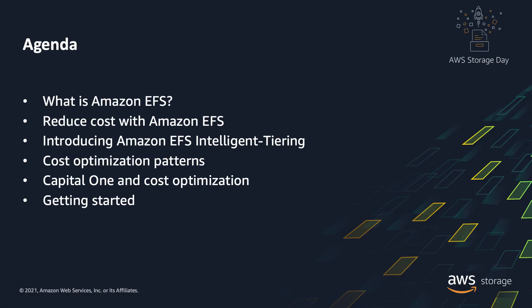I'd like to begin by giving you a quick overview of Amazon EFS. We will talk about the existing options or pillars of cost optimization in EFS. We will discuss when and how to optimize costs in EFS. Then we'll talk about a brand new option available to you to optimize costs called EFS Intelligent Tiering. We will then see how this can be applied to real customer applications, including a customer with a special relationship with the EFS team. Finally, I'd like to summarize with information about how to get started with this brand new feature.